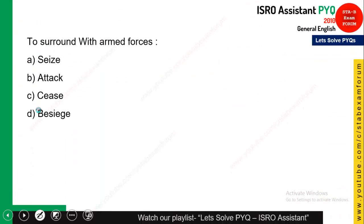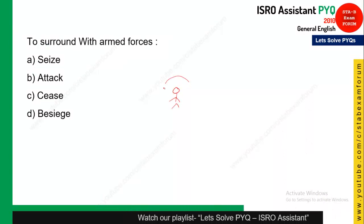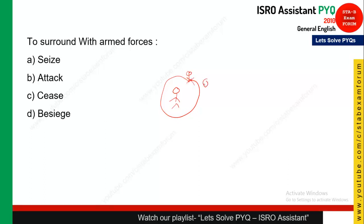The next one-word substitution is: 'to surround with armed forces.' If you are here and you are surrounded by armed forces, the one-word substitution for that is 'besiege.' Just remember, besiege is the correct word, so option D is the correct answer.